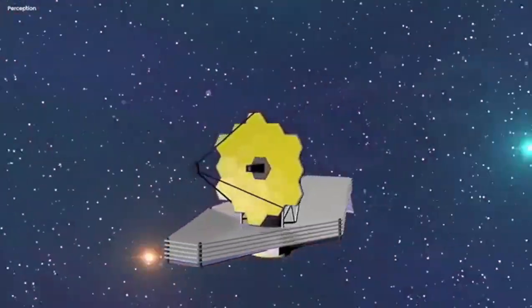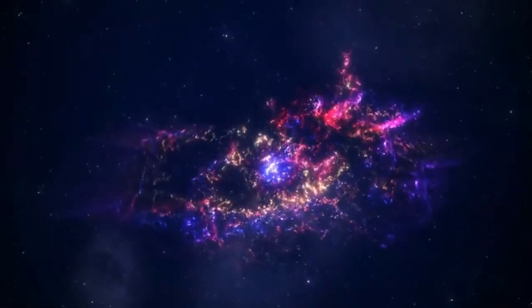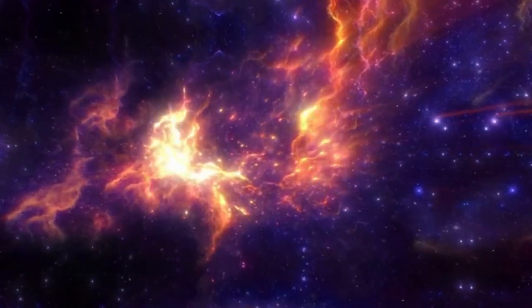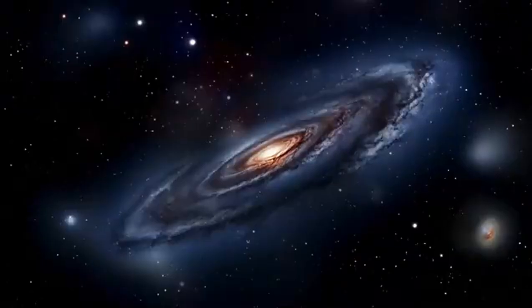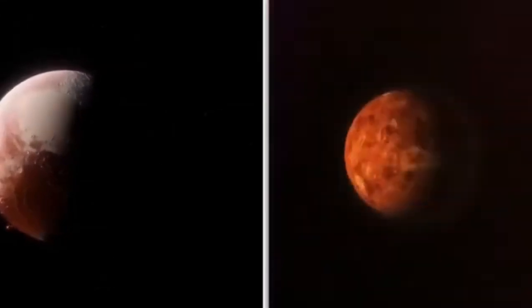Since the exoplanet was 20 times nearer to its star than the Earth is from the Sun, Proxima b was believed to be tidally locked with a permanent day side and night side, similar to our Moon, which faces Earth with the same side at all times. A hypothetical technological civilization on Proxima b might transfer heat and electricity from the day side to the night side using photovoltaic cells that generate electricity out of starlight.